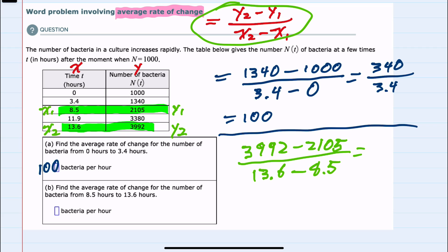Subtracting in the numerator gives us 1887. Subtracting in the denominator gives us 5.1. Doing the division, we have 370. So the rate of change here is 370 bacteria per hour.